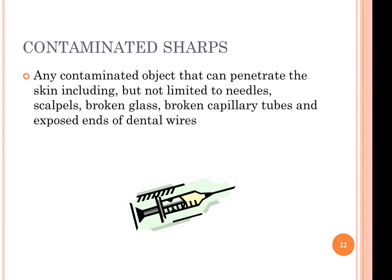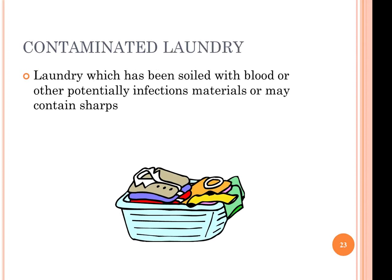Contaminated sharps — most of you won't have access to these, but there may be some students who have diabetes or require other types of injections, and sometimes you might have an EpiPen on hand as well. Any contaminated object that can penetrate the skin — including needle sticks, broken glass, broken capillary tubes, and exposed ends of dental wires — is considered a contaminated sharp. Contaminated laundry may also be present if someone soils their clothes.